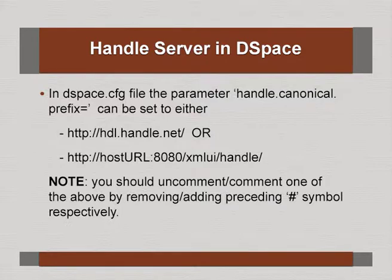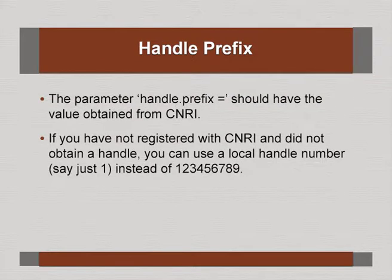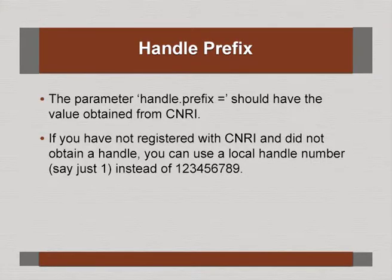Those unaware of this parameter will find that DSpace generates a fictitious handle like hdl.handle.net/123456789/serial-number, which has no meaning. It does not take anybody to any digital document because whoever has not configured their handle server gets the same default prefix with serial numbers. The handle.prefix parameter should have the value obtained from CNRI. If you do not have a CNRI handle, the default in dspace.cfg is something like 12329 — you may replace it with just 1 if not registered.